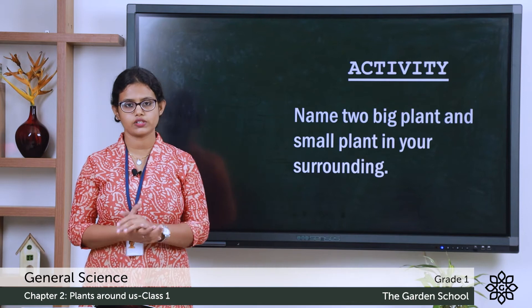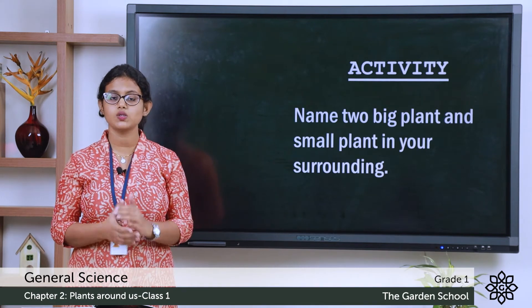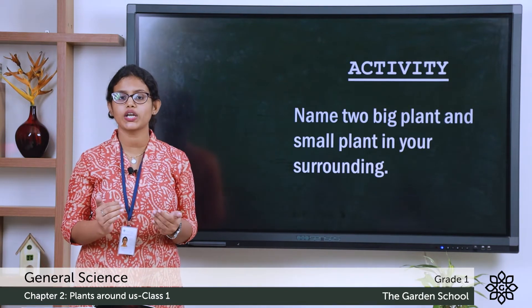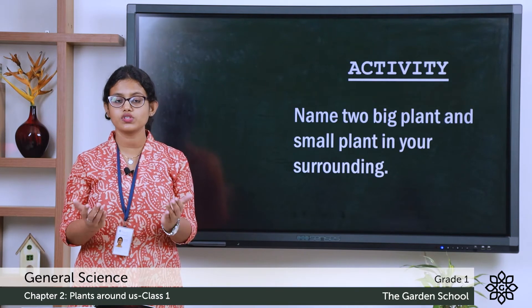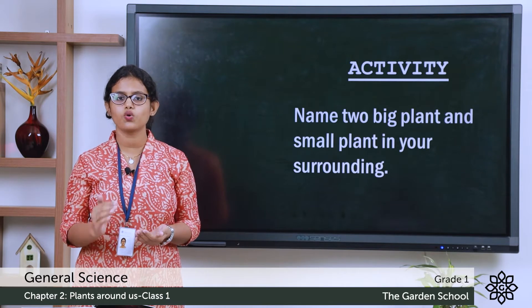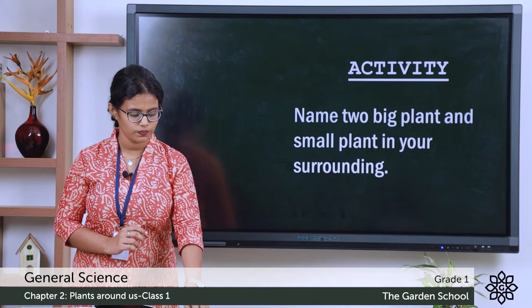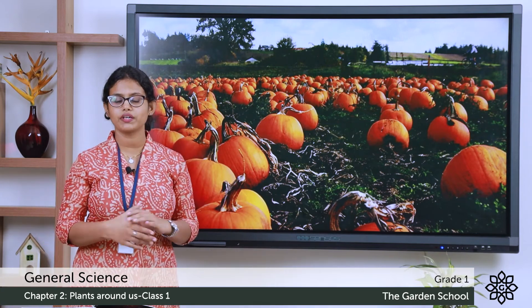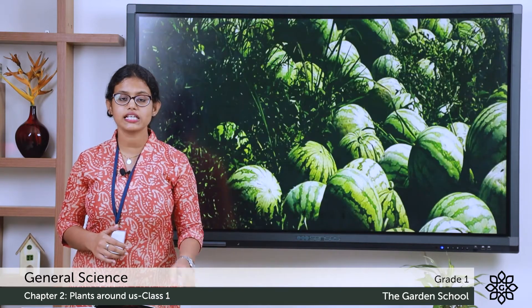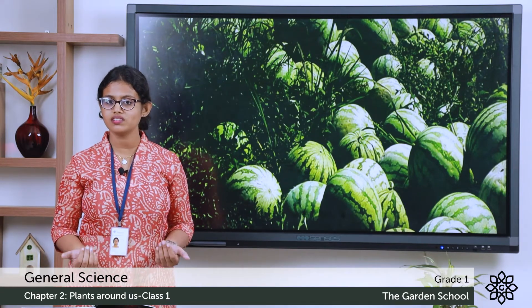Moving on to the next kind of plant — that is creepers. Have you heard about the word creeper? Creepers are plants which grow along the ground. There are some plants which cannot stand straight like trees. Such plants grow along the ground and they are called creepers. Have you seen a pumpkin? Pumpkin is a creeper because it grows along the ground. Another example of a creeper is watermelon — watermelon is a creeper; it grows along the ground.